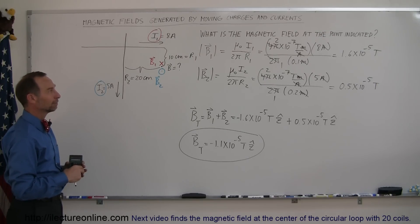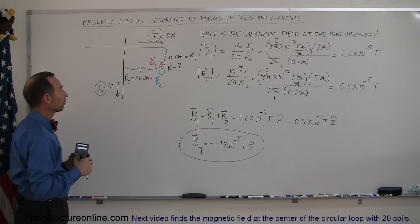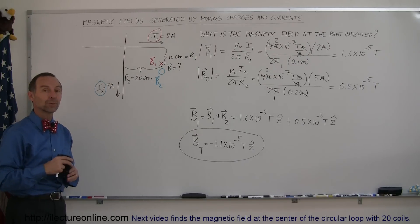Alright, now we'll do some examples of finding magnetic fields, caused by loops of wire, or coils of wire. So let's show you some examples doing that.